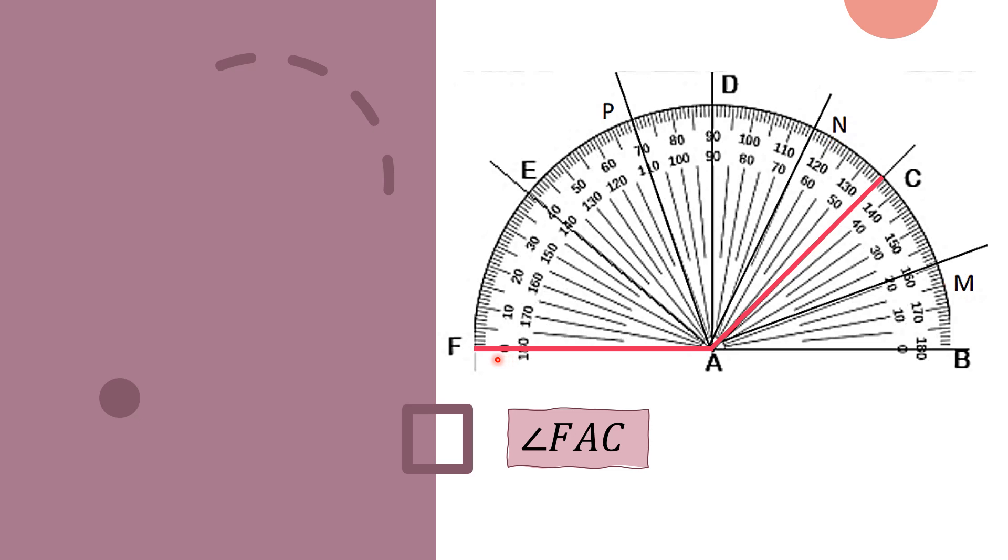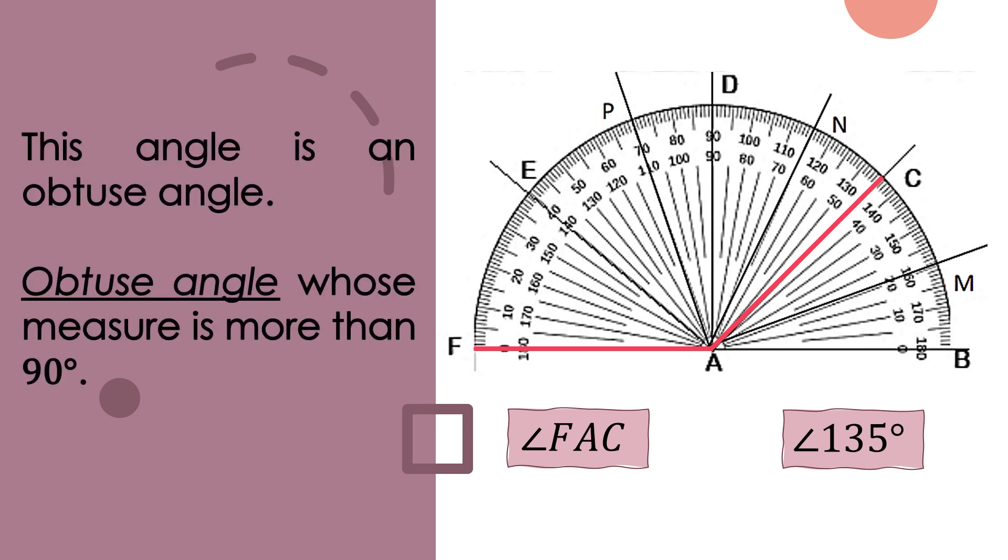Again, since our zero is on the outer scale or on the left, we will use the outer scale numbers. And since line AC or ray AC lies between 130 and 140, therefore angle FAC has the measure of 135 degrees. This angle is an obtuse angle. Obtuse angle whose measure is more than 90 degrees.